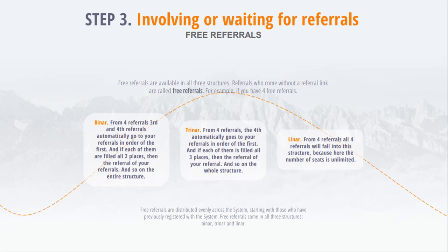Free referrals are available in all three structures. Referrals that come without a referral link are called free referrals. For example, if you got four free referrals — in Biner, the third and fourth referrals automatically go to your referrals in order from the first one, and if each of them has all two places filled, they go to the referral of your referral, and so throughout the structure.